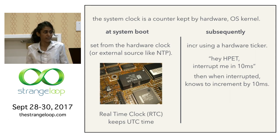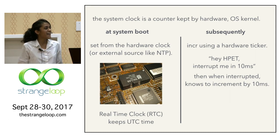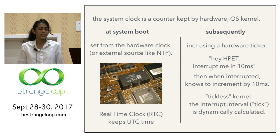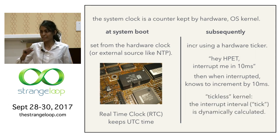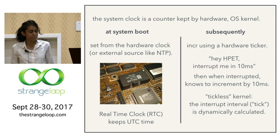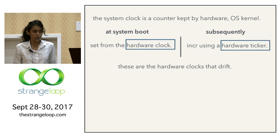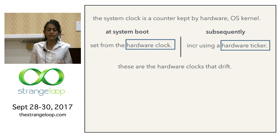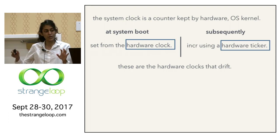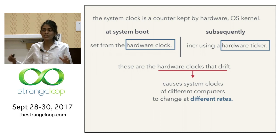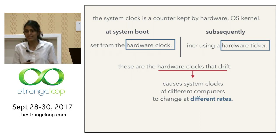Modern kernels are tickless kernels, which means the interrupt interval is calculated dynamically. So this is the system clock and these are the hardware clocks that can drift. When they drift, it means different computer clocks change at different rates. The real problem is that our clocks are not synchronized.